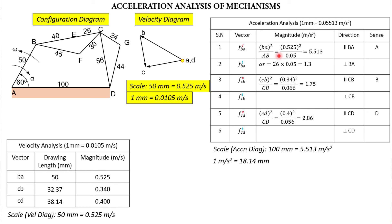Two key formulas to remember: centripetal acceleration = V²/R, and tangential acceleration = α × R. For link AB: centripetal = (0.525)² / 0.05 = 5.513 m/s². Tangential = alpha × R = 26 × 0.05 = 1.3 m/s². Alpha for link AB has been given as 26 rad/s² and it is a retarding case — so the angular velocity will decrease, not increase.